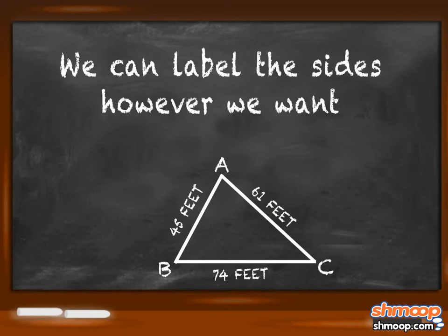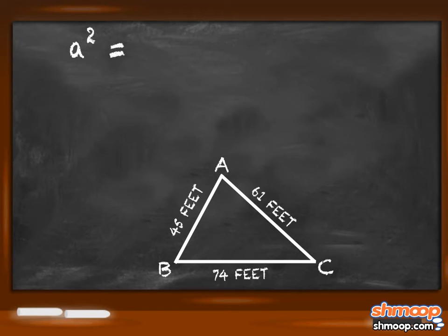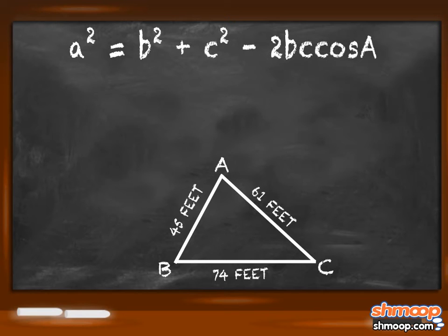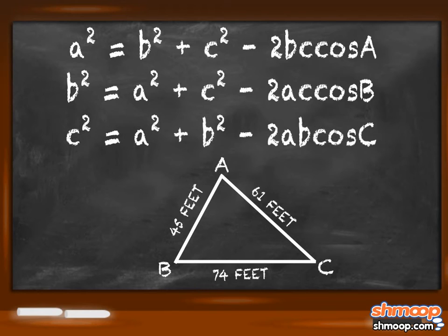Since we can label the sides however we want, we can change the variables in the Law of Cosines such that a squared equals b squared plus c squared minus 2bc cosine a, b squared equals a squared plus c squared minus 2ac cosine b, and c squared equals a squared plus b squared minus 2ab cosine c. All work.